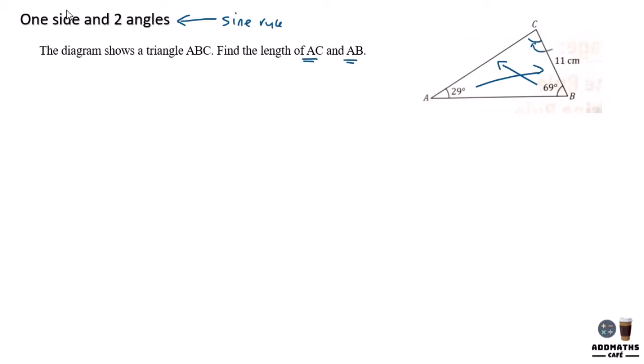You also have to find this angle, which is 69, 29, and the total is 118. So 180 minus 29 minus 69 will give you an answer of 82 degrees. So let's try to find AC. We say that this is y.